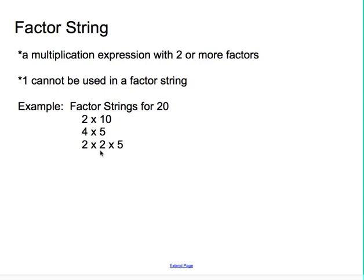2 times 2 is 4, times 5 is 20. All of these three are different factor strings for the number 20.